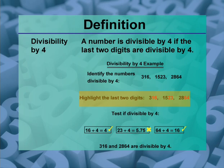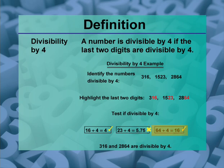Highlight the last two digits. Test if these last two digits are divisible by 4. In the case of 316, 16 is divisible by 4. In the case of 1523, 23 is not divisible by 4. In the case of 2864, 64 is divisible by 4.